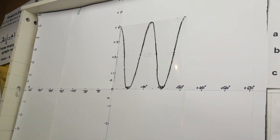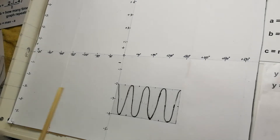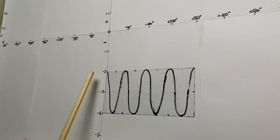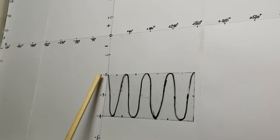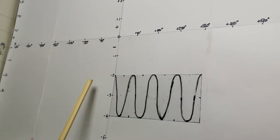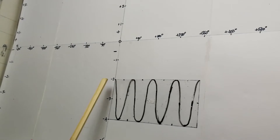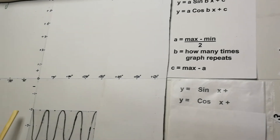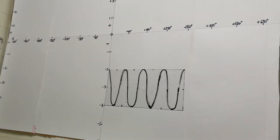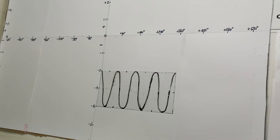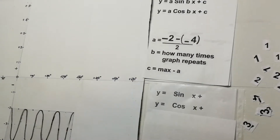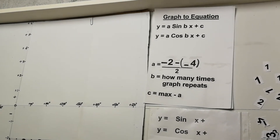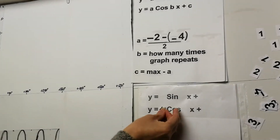The +2 means the graph has essentially been shifted upward by 2. Next graph: it starts at the top, so it's a cosine graph — cosine starts at the top, sine starts in the center. For the a value: the maximum is negative 2 and the minimum is negative 4. Negative 2 minus negative 4 = 2, divided by 2 = 1. So a = 1.